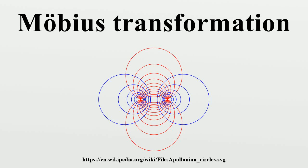In geometry and complex analysis, a Möbius transformation of the complex plane is a rational function of the form of one complex variable z, where the coefficients a, b, c, d are complex numbers satisfying ad minus bc ≠ 0. Geometrically, a Möbius transformation can be obtained by first performing stereographic projection from the plane to the unit two-sphere, rotating and moving the sphere to a new location and orientation in space, and then performing stereographic projection back to the plane.